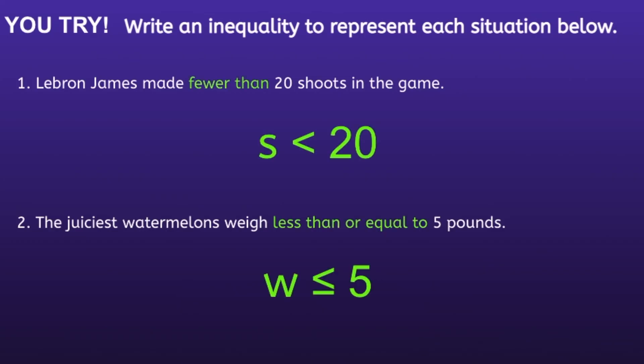Let's take a look. For number one, the inequality would be s is less than 20. I used the variable s to represent the shots. For number two, the inequality would be w is less than or equal to 5. I used the variable w to represent the watermelons. It is perfectly fine if you use different variables, as long as your inequality signs and your numbers are the same.